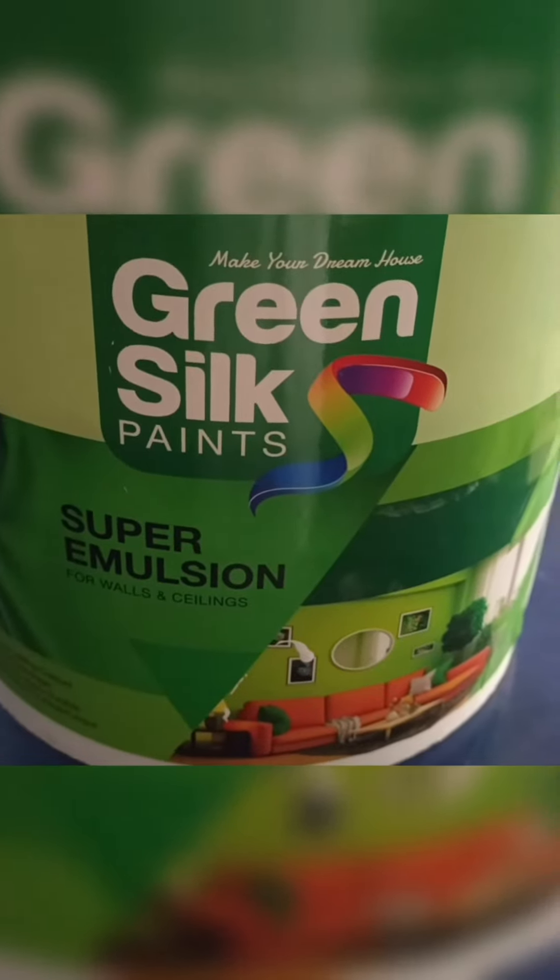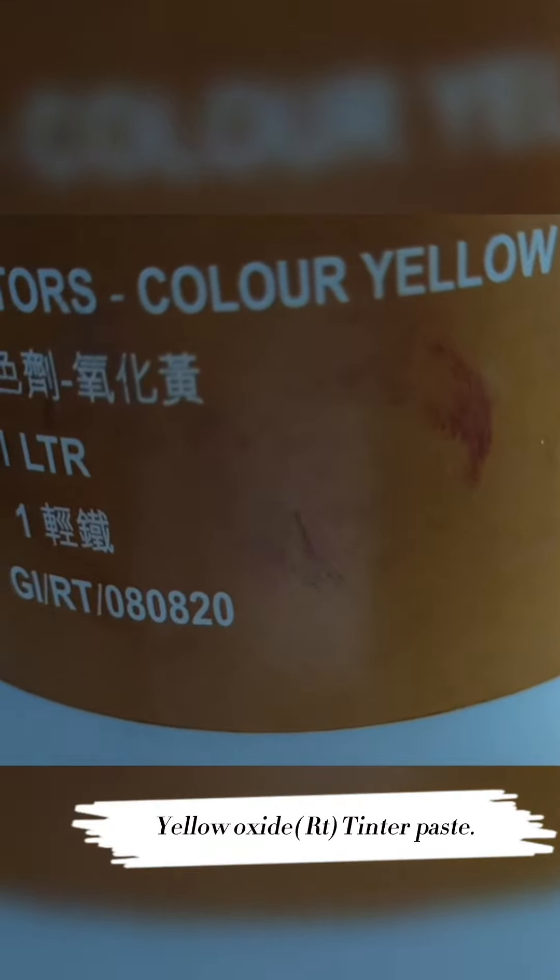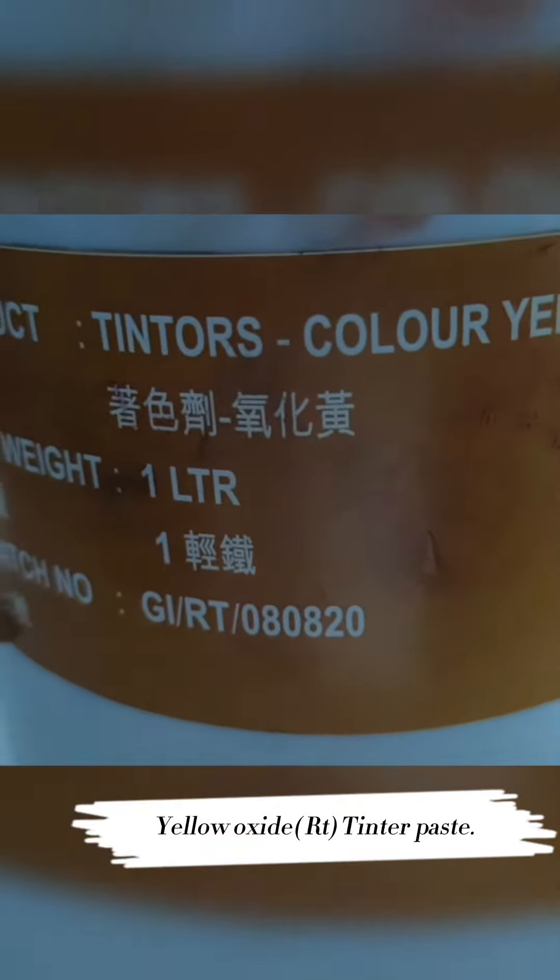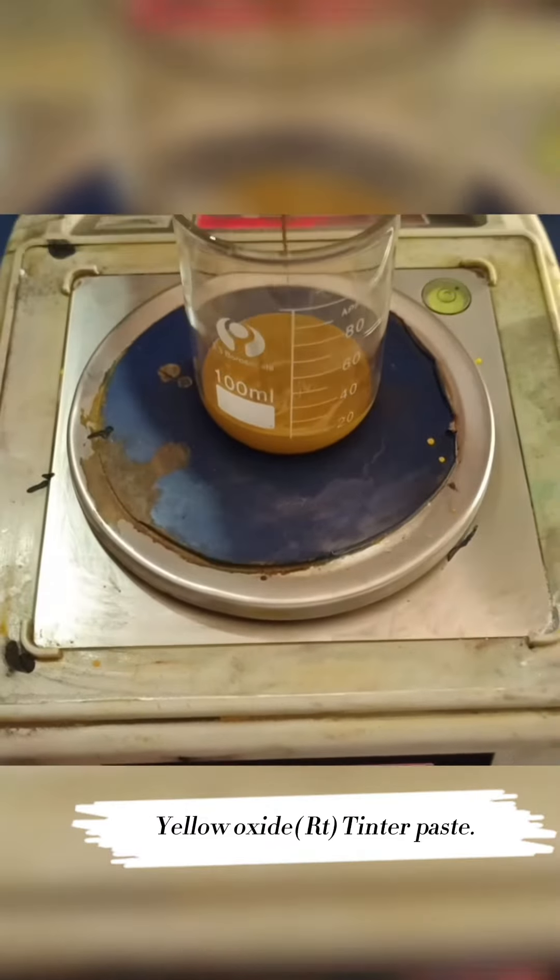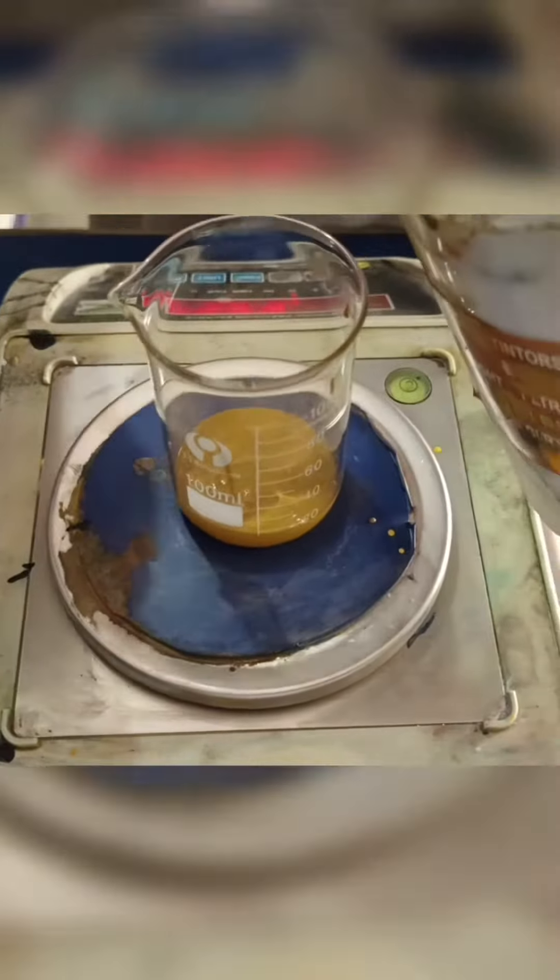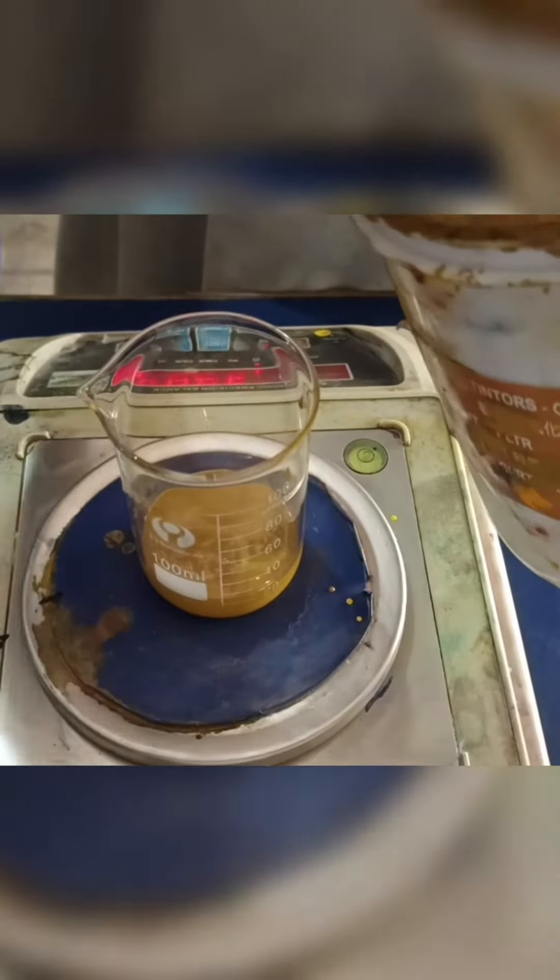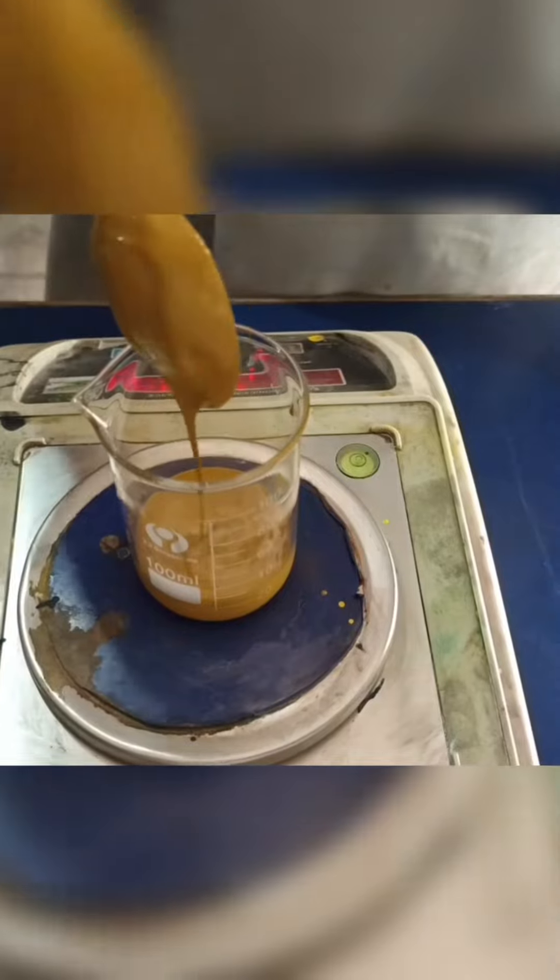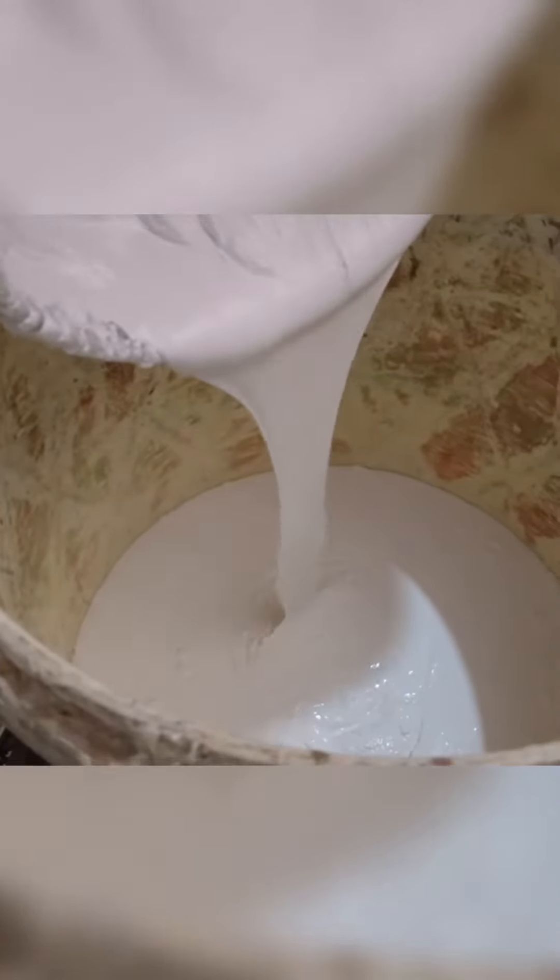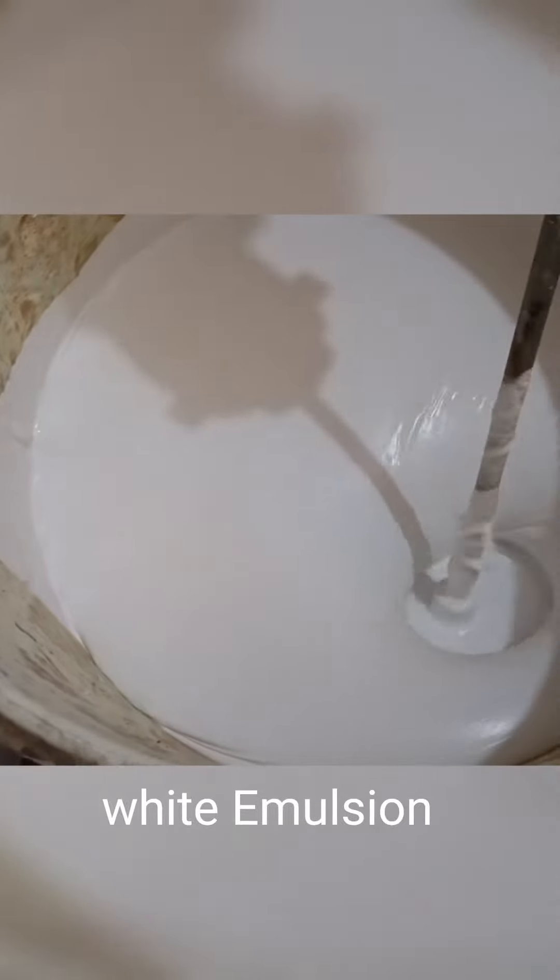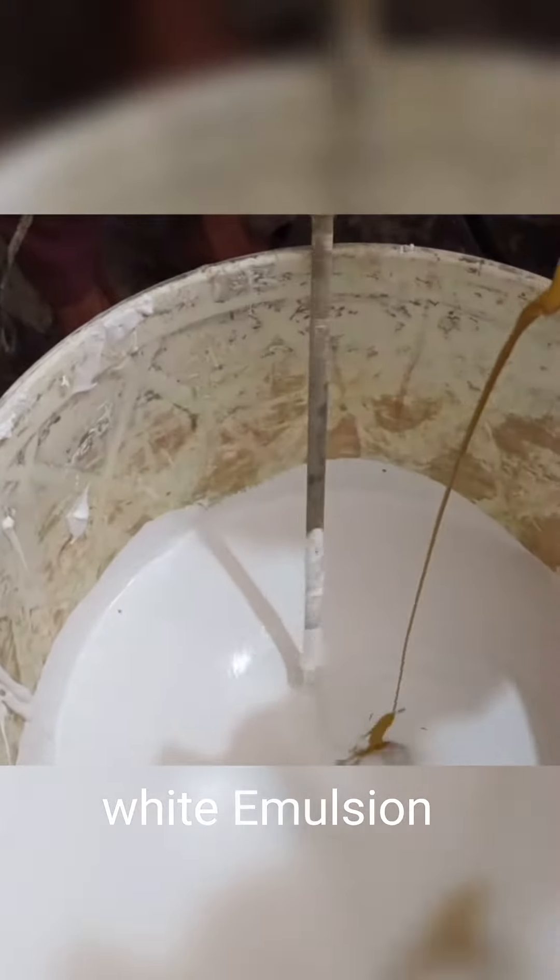Assalamu alaikum. In this three-minute tinting series, we will guide you to make water-based emulsions for weather sheet tinting. First of all, we will weigh 30 grams of yellow oxide, and then we take the emulsion white.